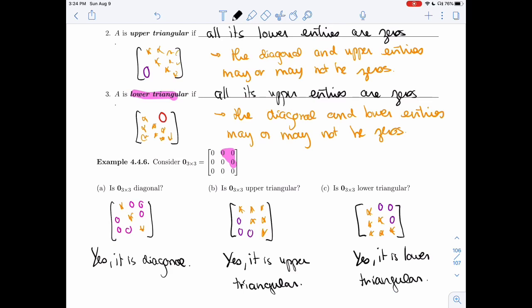All right, so these diagonal, upper triangular, and lower triangular matrices are going to be important once we start looking at determinants. It will be very easy to compute their determinants, so we'll use them often.